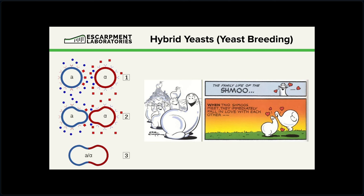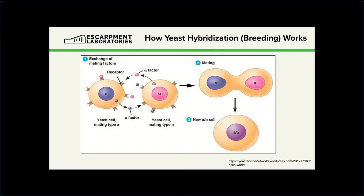You have these two strains with opposite mating types — kind of like sex chromosomes for mammals. They fuse and you end up with a hybrid strain that will have genetic material from both parents. You have basically exchange of mating factors or pheromones — just like humans, yeast dim the lights, put on some slow jams, exchange their pheromones, they mate, and you've got a new cell. It's a surprisingly similar process, although with yeast it's a little bit more simple. At the end of the day with yeast, we can make a new yeast strain through breeding in a matter of a couple of days.